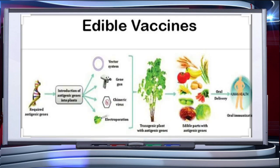Another important type is edible vaccines, produced by DNA technology. Certain protein-coding genes isolated from pathogens are incorporated and expressed in plants, which then produce antigens. These are also called edible vaccines. This covers the production of vaccines by genetic engineering and the production of insulin by genetic engineering — the two main topics of this presentation.